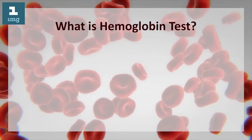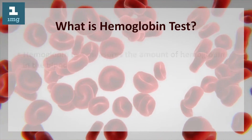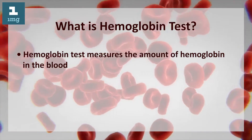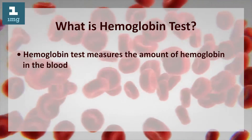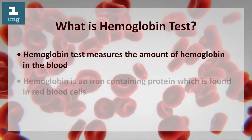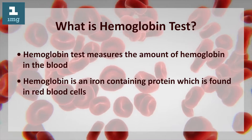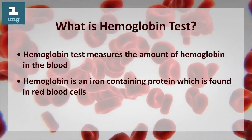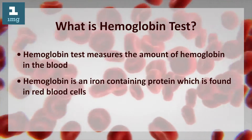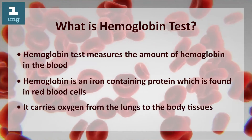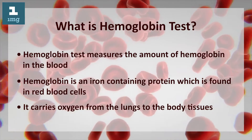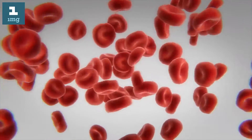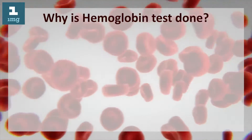What is a hemoglobin test? A hemoglobin test measures the amount of hemoglobin in the blood. Hemoglobin is an iron-containing protein found in red blood cells that carries oxygen from the lungs to the body tissues.